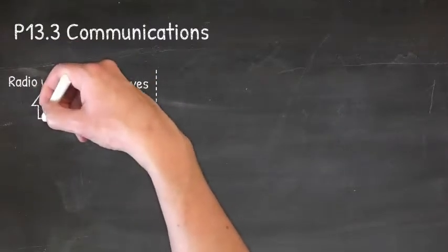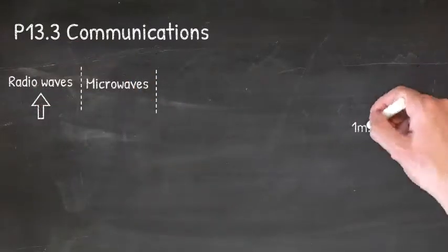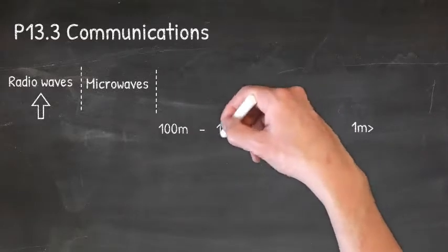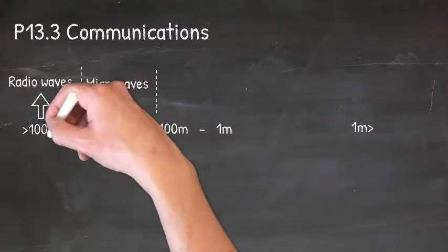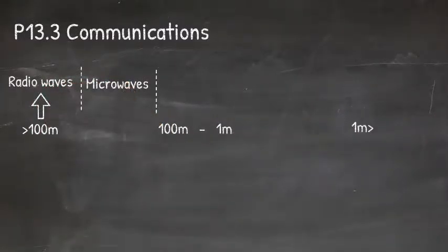So let's have a look at radio waves. There are three radio wave bands you must know: radio waves less than one meter, radio waves between 100 meters and one meter, and radio waves with a wavelength greater than 100 meters.